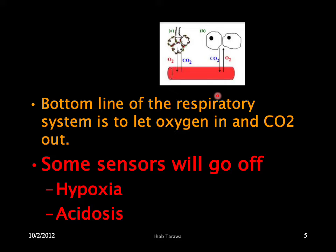The function of the respiratory muscles is to suck air inside the lung. They generate negative pressure so that air enters the alveoli and moves inside the alveolar-capillary membrane. Here at the alveolar-capillary membrane, oxygen enters the blood vessels and carbon dioxide comes out. Fortunately, the body has sensors that monitor this process.